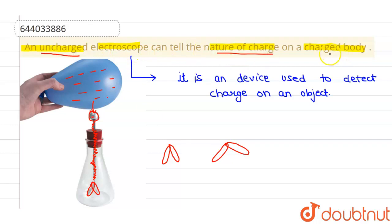tell the nature of charge on a charged body is an incorrect statement or false statement, because it cannot tell the nature. It can just show you that the device is having some charge or not. So this